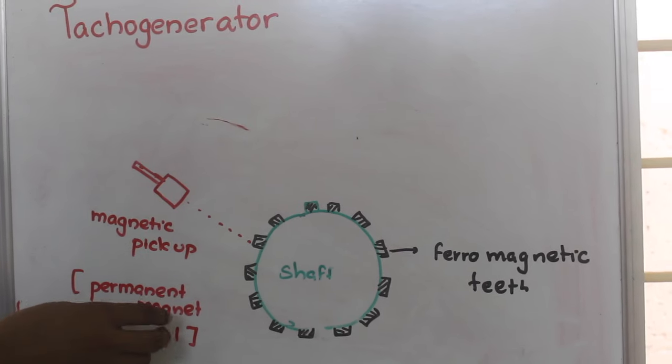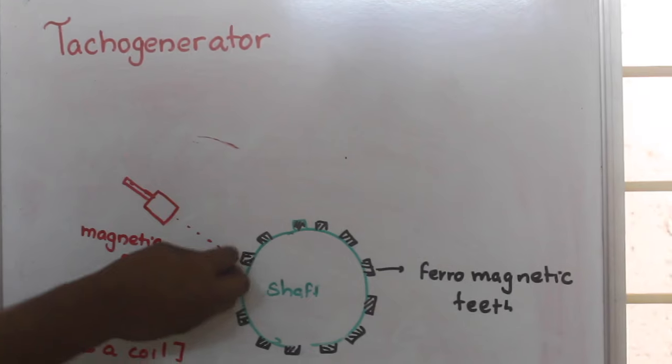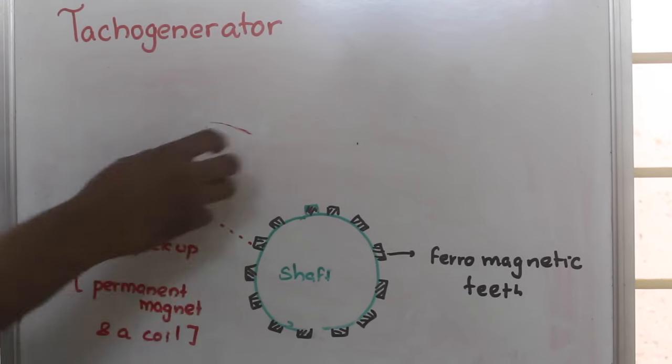Because of this permanent magnet, there will be a magnetic field between this tooth and shaft, and there will be some reluctance.